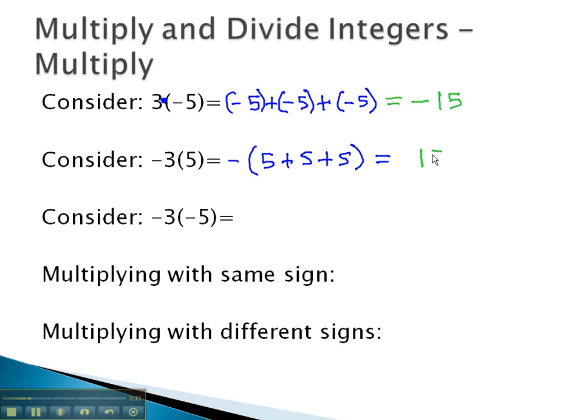Well, the 3 5's are 15, and if we take the opposite of it, we get negative 15 for a solution.